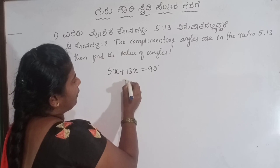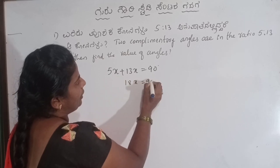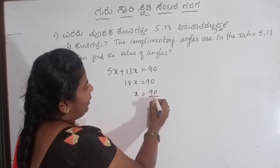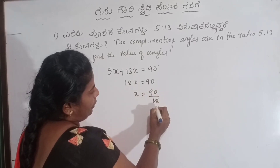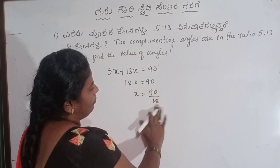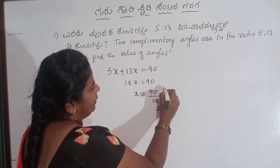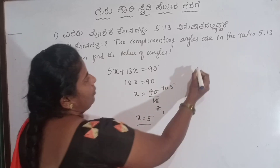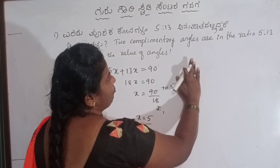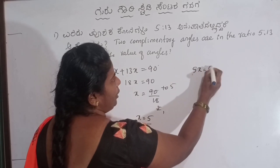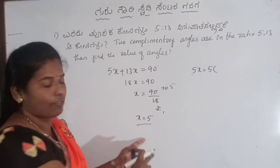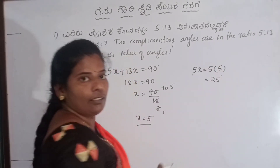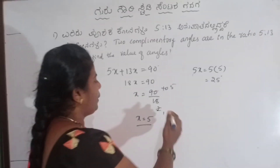73x is equal to 19 degree. 5 is the value of x. 90 divided by 18. 19x into 5: first angle 5x is equal to 5 into x — x value is 5. So 5 into 5 is 25 degree, one angle. One cone is 28 degree.